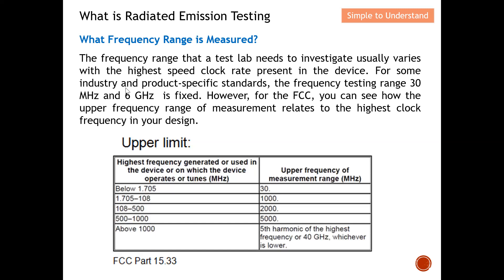For CE, the measurement typically stops at 6 GHz and is more straightforward — you must comply from 30 MHz all the way to 6 GHz. FCC is stricter in that it measures harmonics and can require measurement up to five harmonics or as high as 40 GHz. For FCC compliance, you check your highest clock rate against the FCC table to determine your upper frequency measurement range.